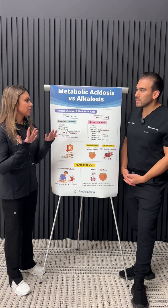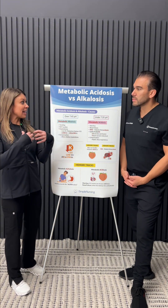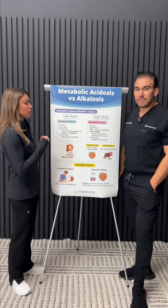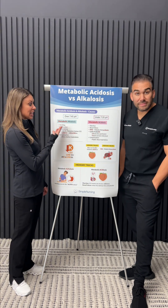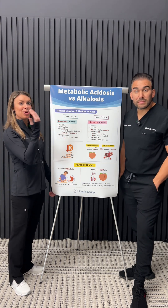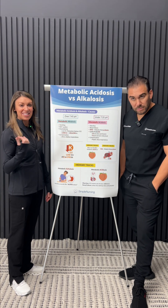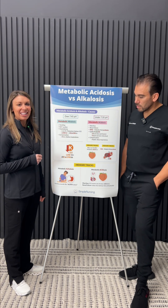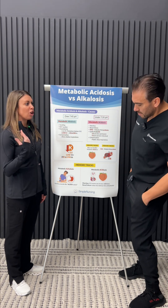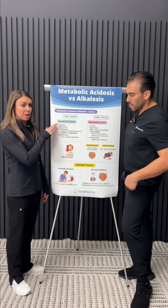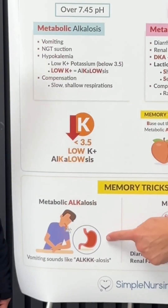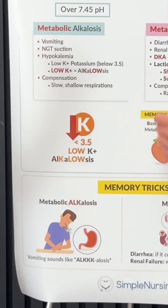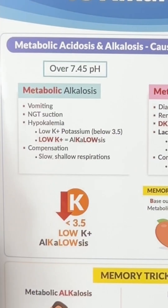With metabolic alkalosis, like if someone's vomiting, you have your stomach acid. If you're losing your stomach acid, then you're going to be losing the acid, putting you into alkalosis. A memory trick: an alcoholic might vomit. So vomiting, and also NG tube suctioning, because that's pulling that stomach acid out.